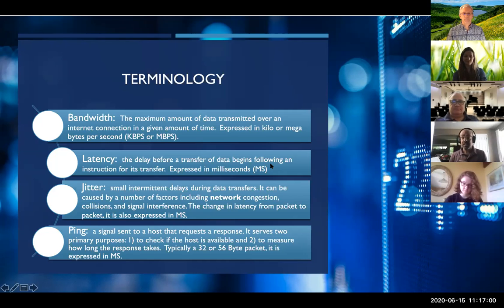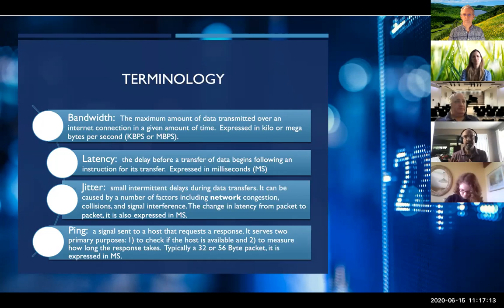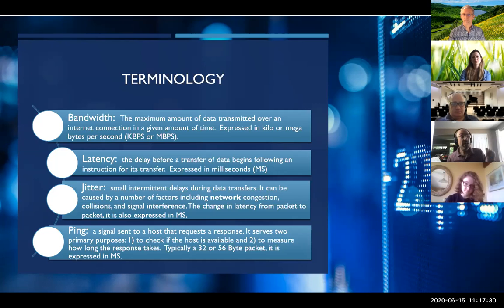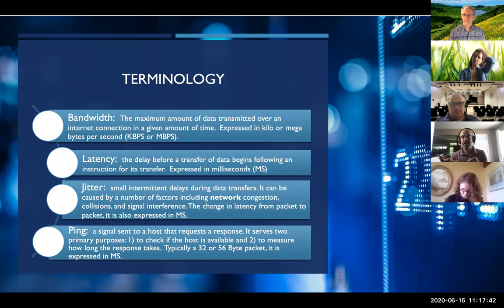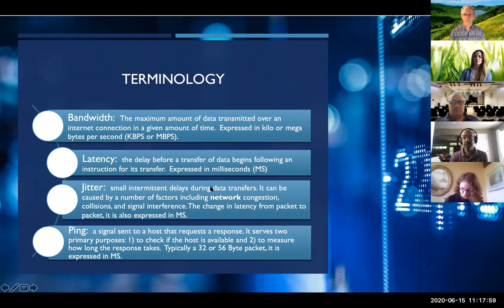Latency has to do with the delay that interferes with data transfer. In the auto analogy, latency is like an accident slowing your progress — not driving slowly intentionally, but something slowing it down. Jitter is a term dealing with factors that interfere with your network, like having a TV on in the background creating electromagnetic issues. Ping is literally a test: your computer sends out a small signal and measures how fast it returns.